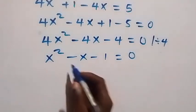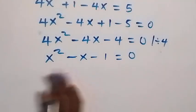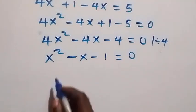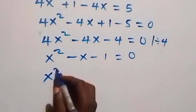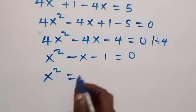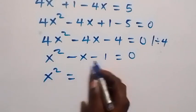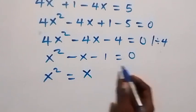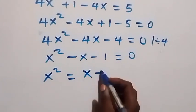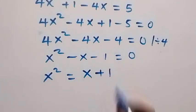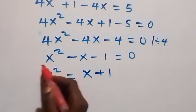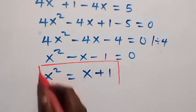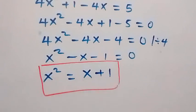Let's make x squared the subject. From here we have x squared equals to — when we take minus x to the other side it becomes plus x, and minus 1 becomes plus 1. So x squared equals to x plus 1.